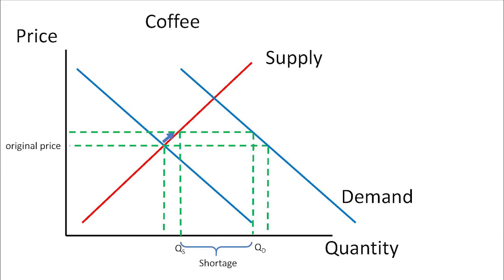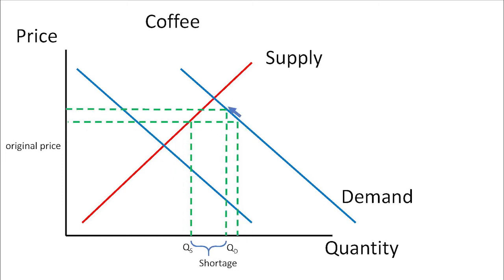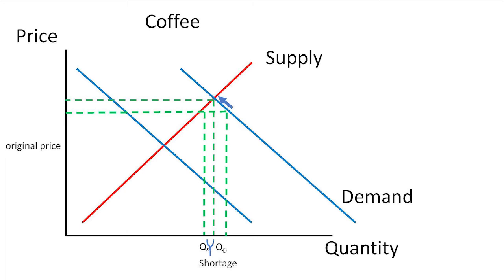They'll raise the price. So first, buyers bid up the price. If we have a shortage, buyers will start bidding up the price. As they bid up the price, sellers will respond by raising it. When buyers bid up the price, some people who wanted coffee at this price no longer want it at this price, so quantity demanded decreases. When the price goes up, some sellers are now willing to sell more, so quantity supplied shifts to the right. This process continues as buyers bid up the price and sellers respond, until we reach a new equilibrium where quantity supplied equals quantity demanded.